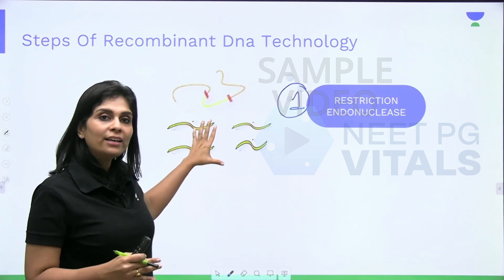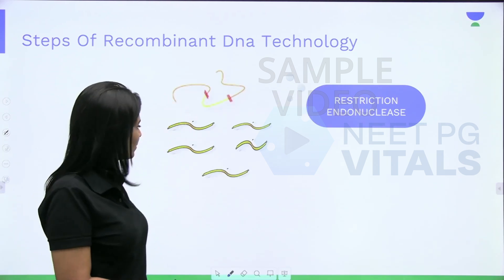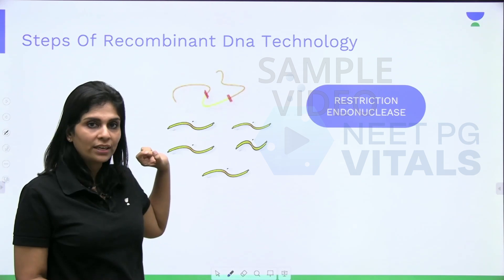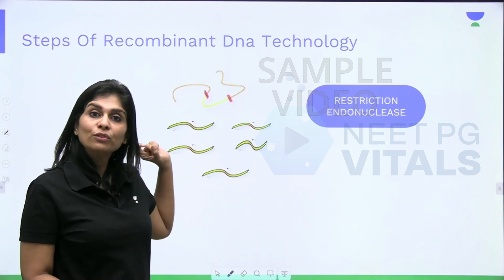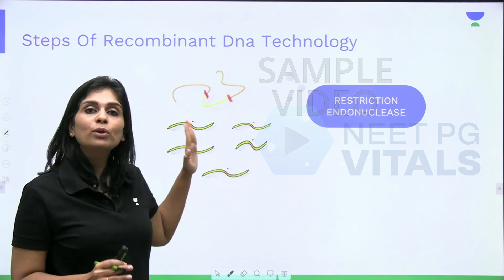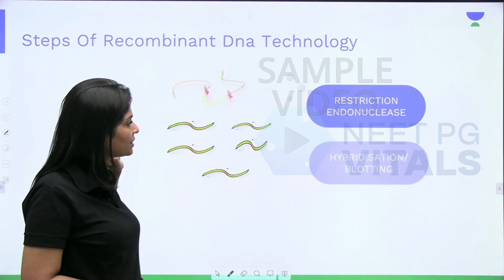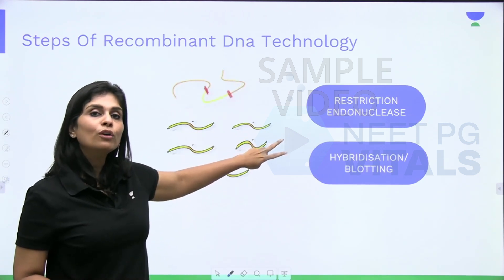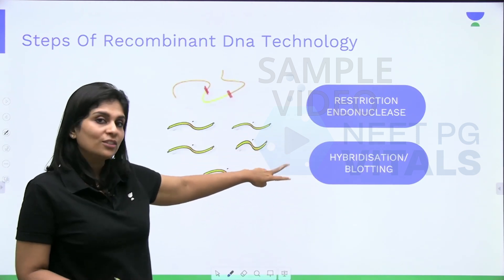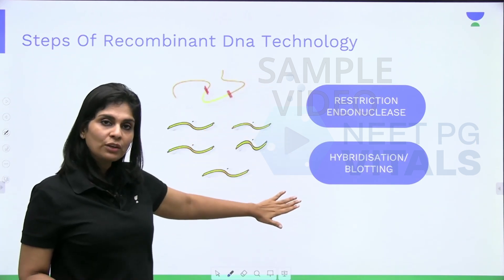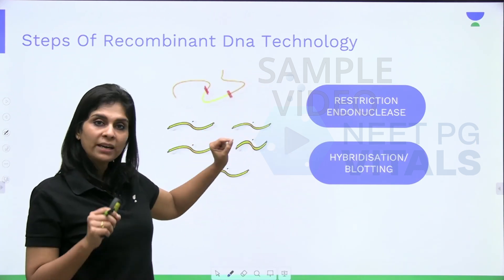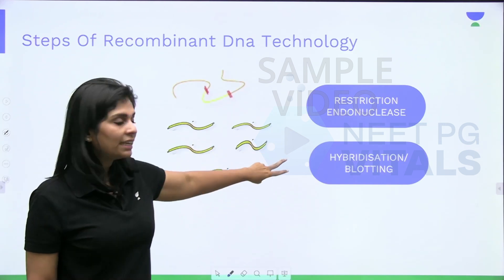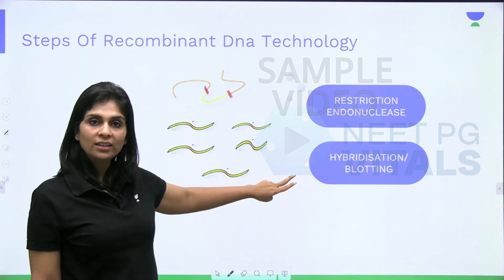After you have all these fragments, in the next step we identify the fragment with the gene of interest. How do you identify it? For that we employ a technique called hybridization or blotting technique. That is the second tool of recombinant DNA technology. I will tell you about all the tools one by one shortly. For now just remember the list of tools.